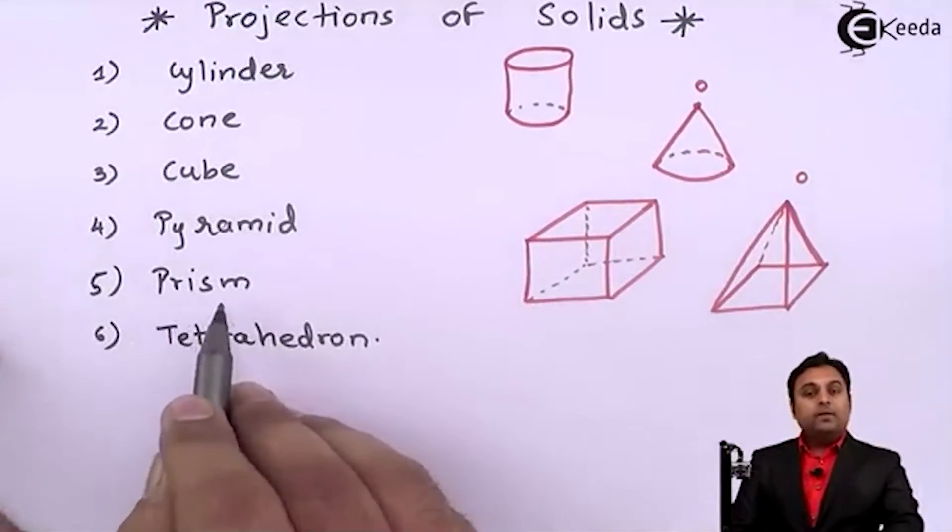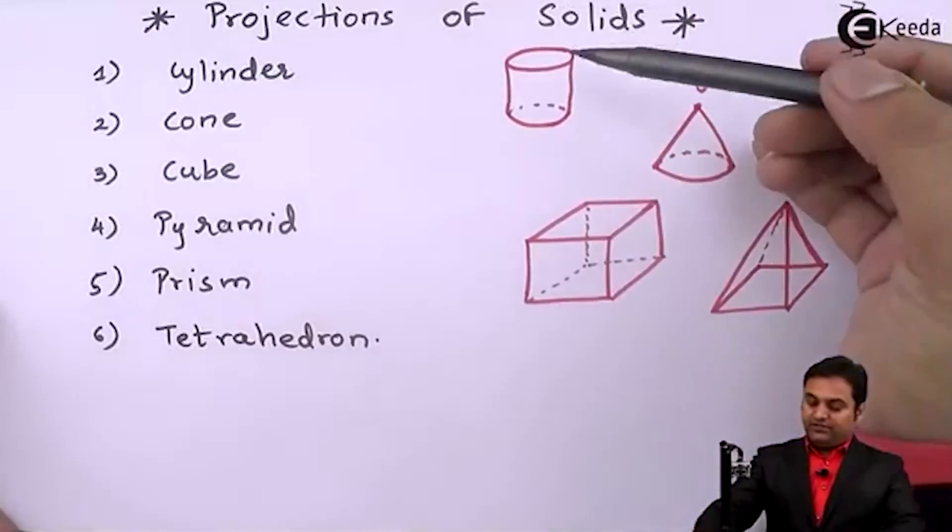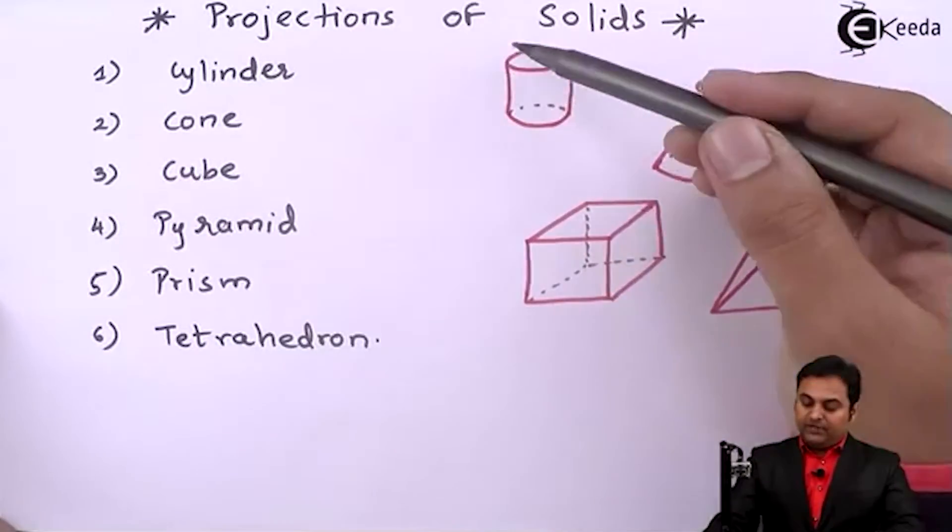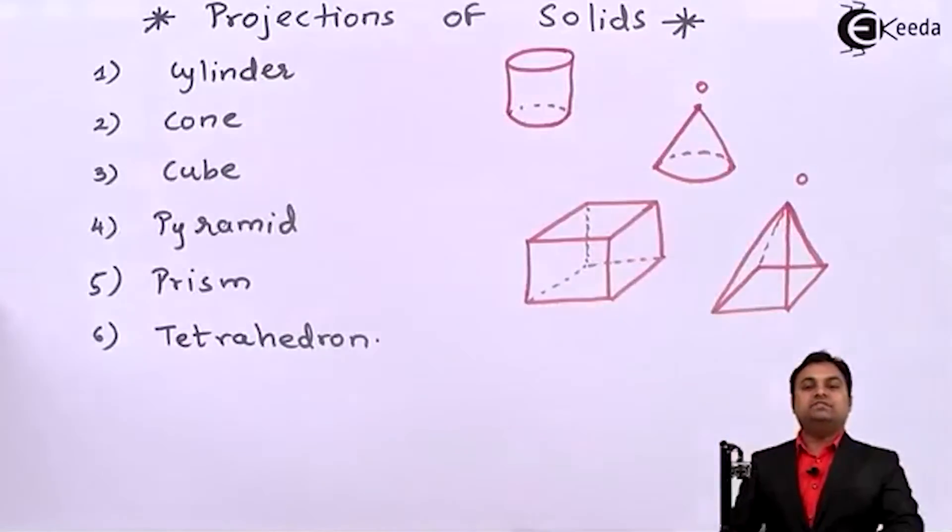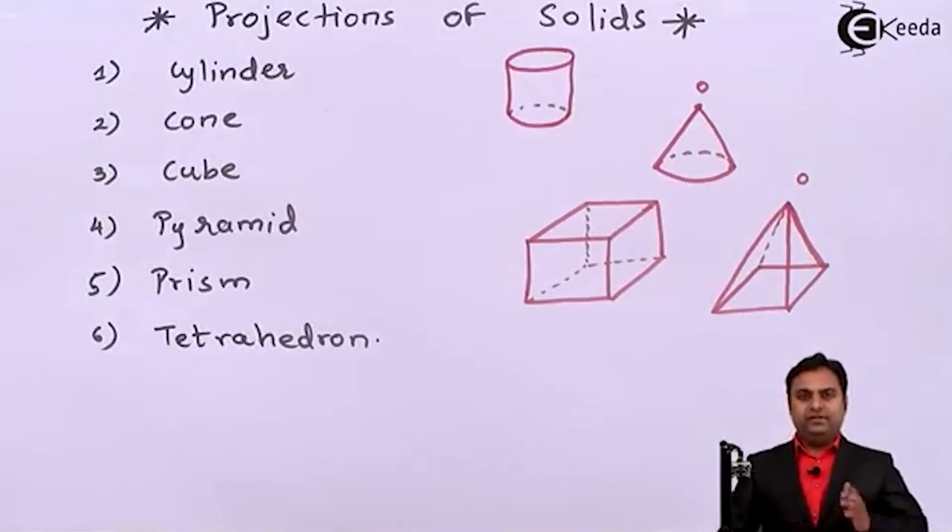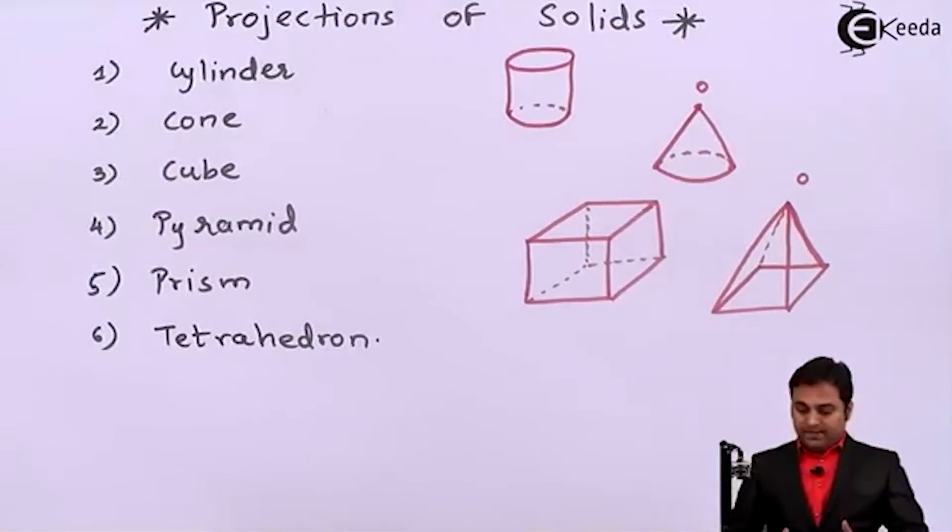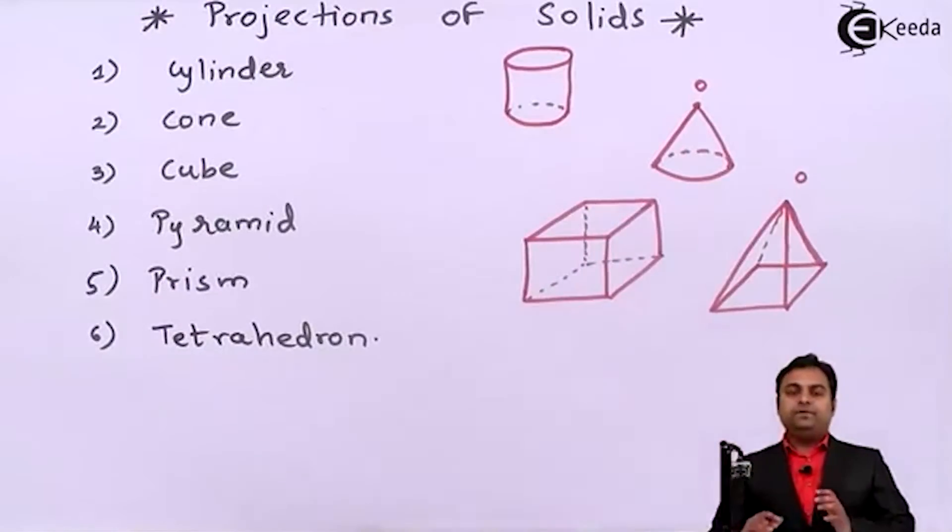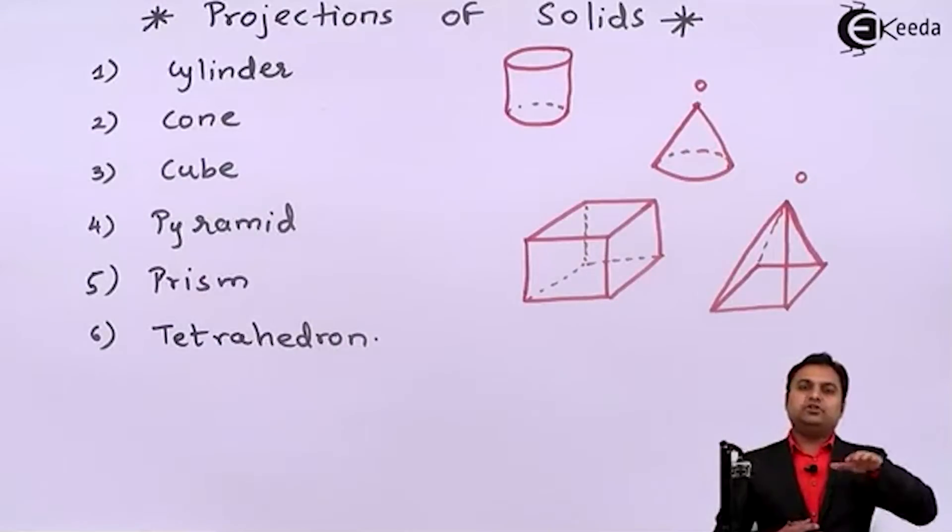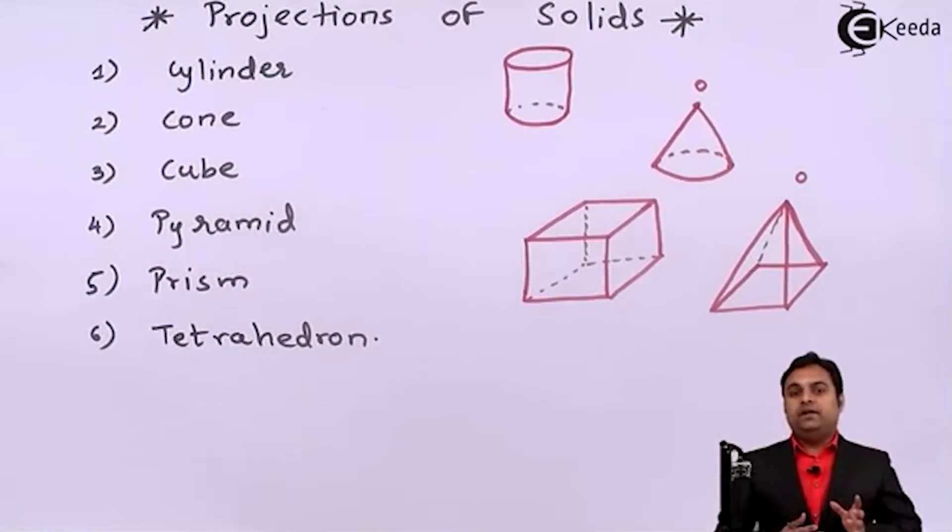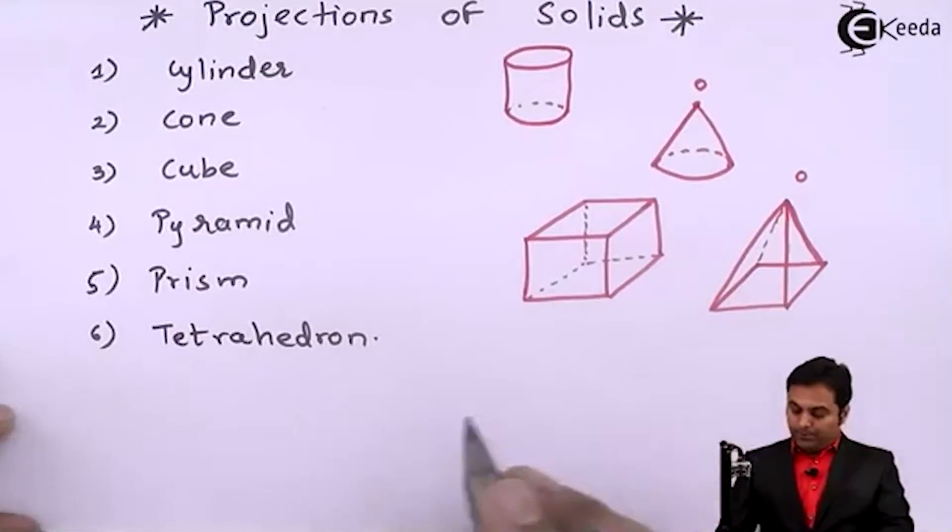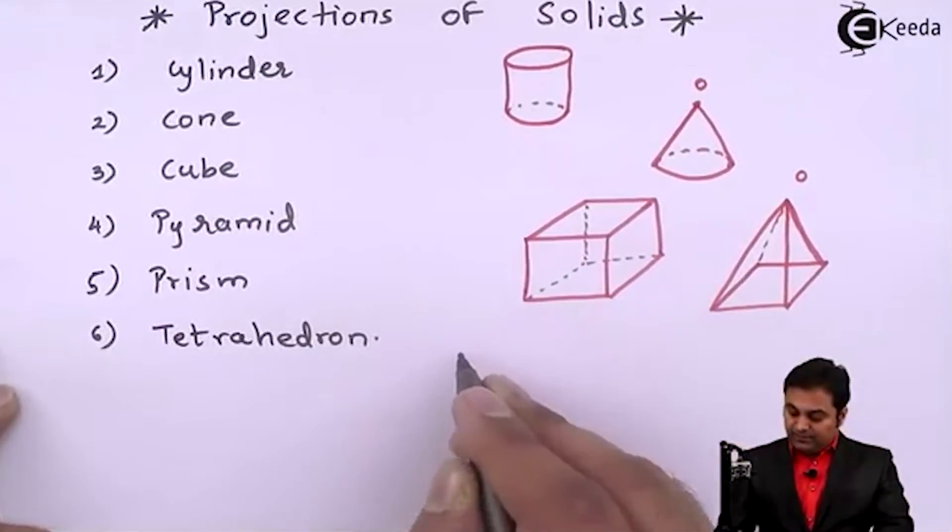Then there is prism. Prism like I can consider cylinder which is having at top a circle and even at the bottom there is a circle. So cylinder can also be considered as a circular prism. Next cube can also be considered as a prism. It means prism is that solid in which the base as well as the top they are same. It means if at the base, like for example if I draw a hexagonal prism.